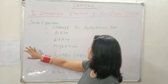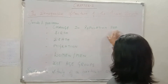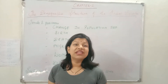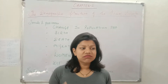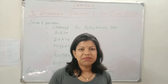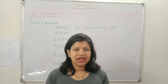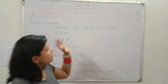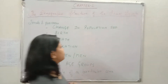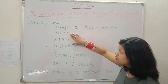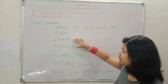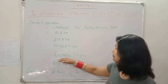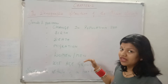Demography tells us about change in population size. Like we are talking about Italy and China — this many people have died. How have we got to know about that? By the demography structure. Second, it tells about birth, death, migration, and it also tells about men and women as well.